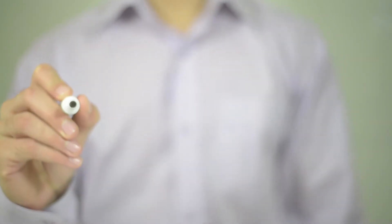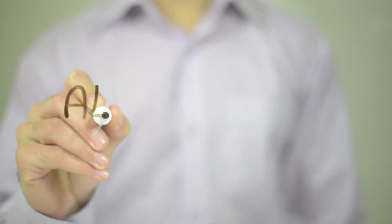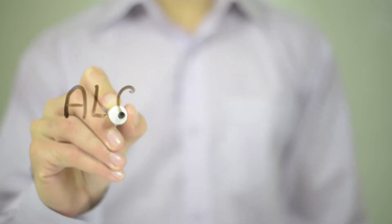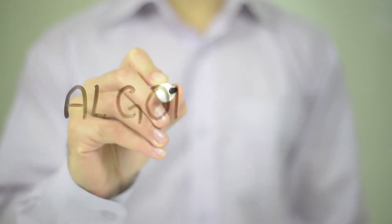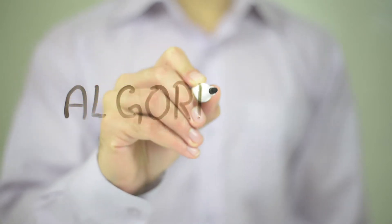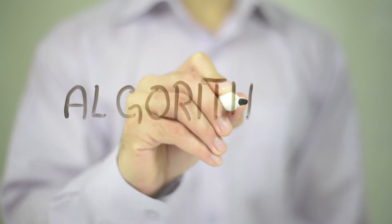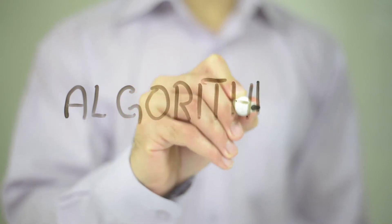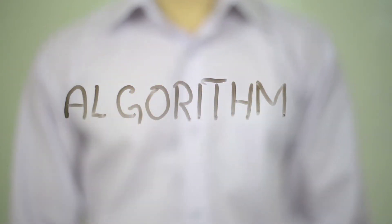Our next Lego coding project teaches the basics of an algorithm. What is an algorithm, you may be asking? In the simplest terms, an algorithm is a sequence of actions that are strung together to solve a problem. We will be using the directions left, right, and straight to solve a Lego challenge.